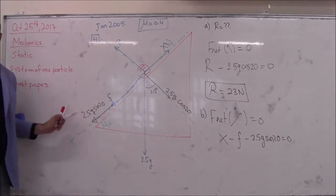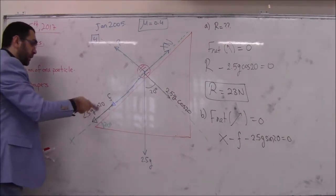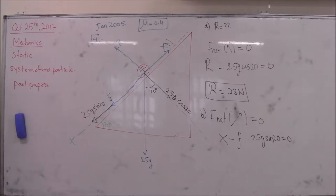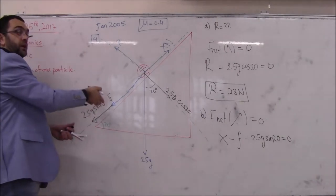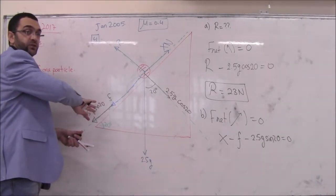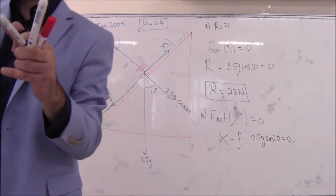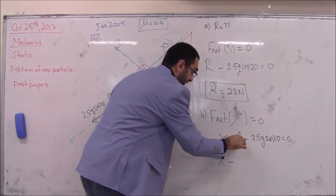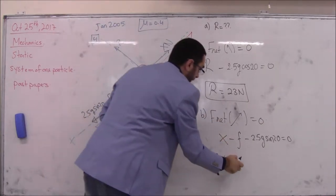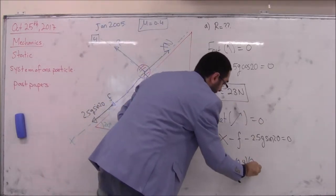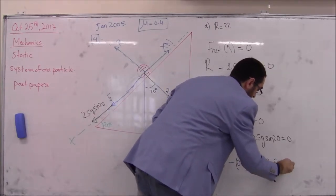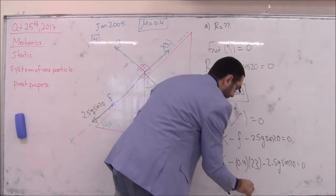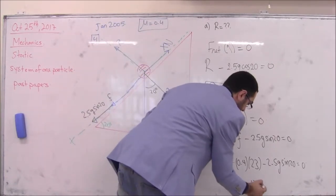Important: a common mistake is thinking 2.5g sine 20 is a friction force — it is not. It's a component of the weight. It may act in the opposite direction of motion, but it is not friction. Friction equals μR = 0.4 × 23. Substituting: X minus 0.4 × 23 minus 2.5g sine 20 equals zero. So X equals 17.6 Newtons.